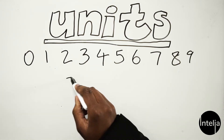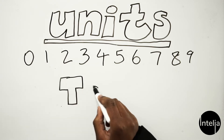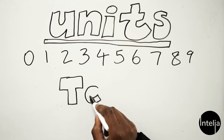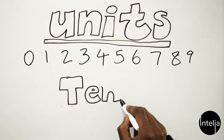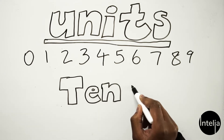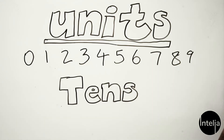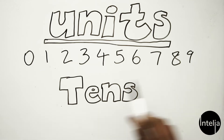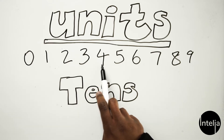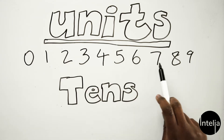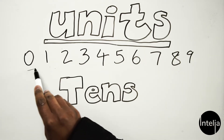And tens are numbers that stand in twos. I'll show you right now. So zero, one, two, three, four, five, six, seven, eight, and nine are units because they stand by themselves.